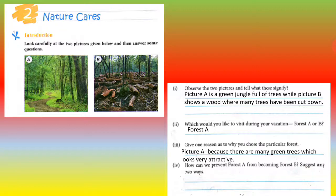How can we prevent forest A from becoming forest B? Suggest any two ways. Forest A, where there is greenery, do not make it forest B. What should we do? First, by planting more and more trees. Second, by stopping cutting trees.